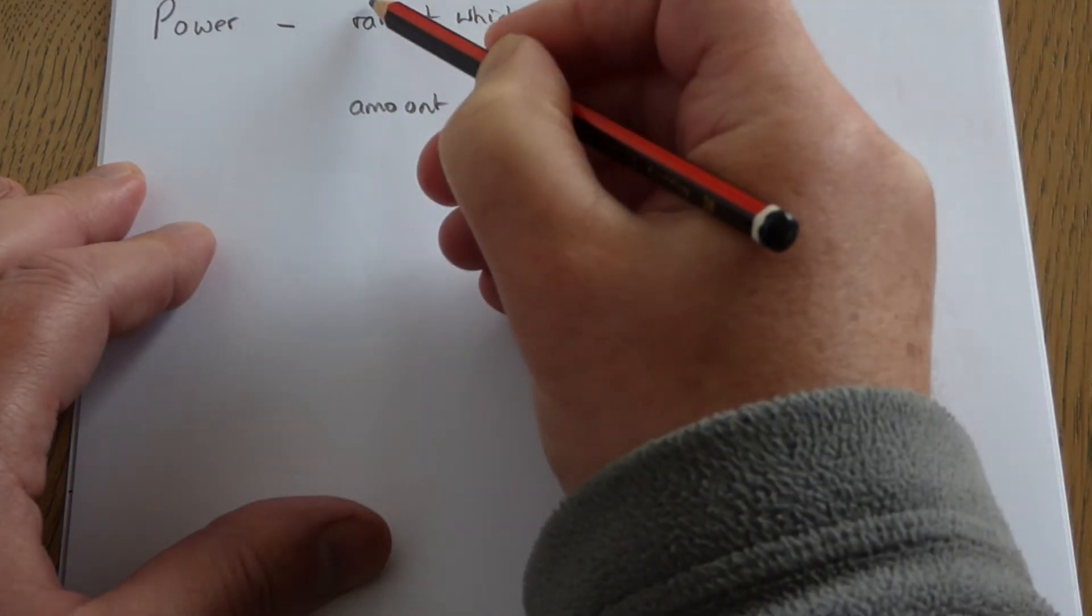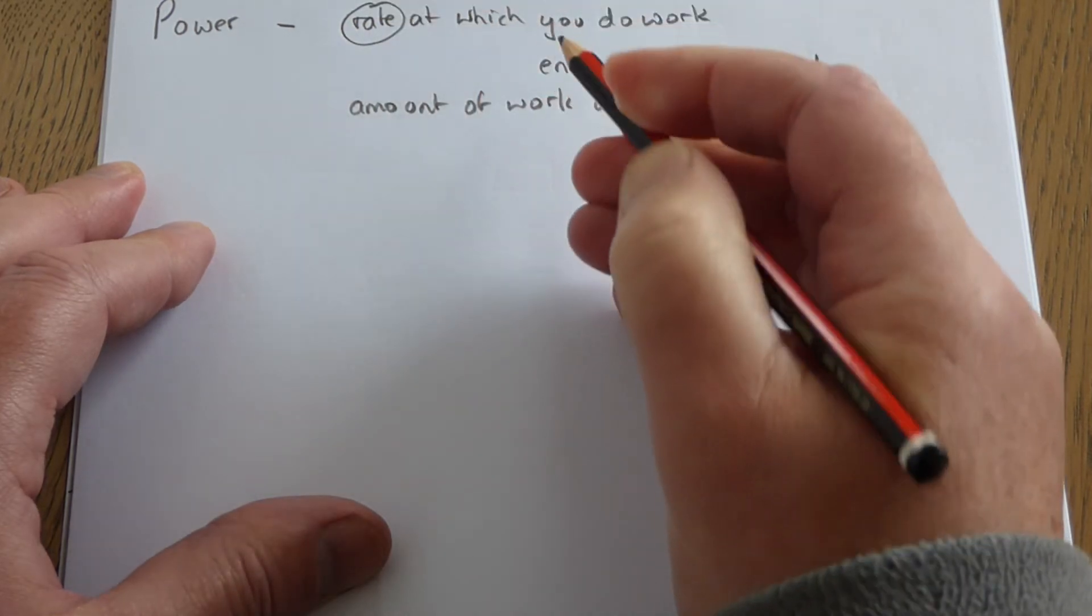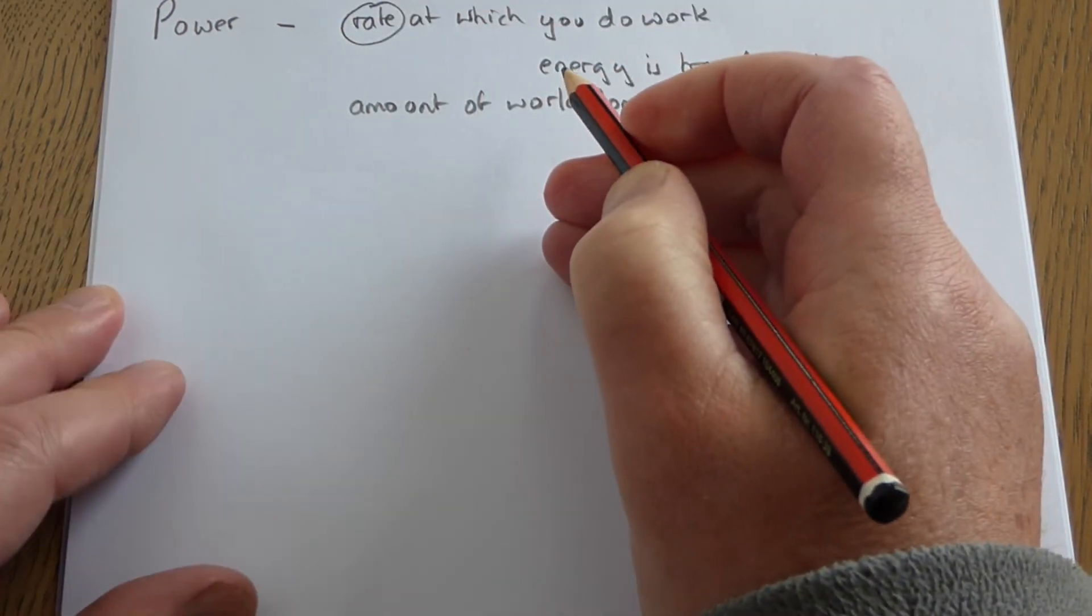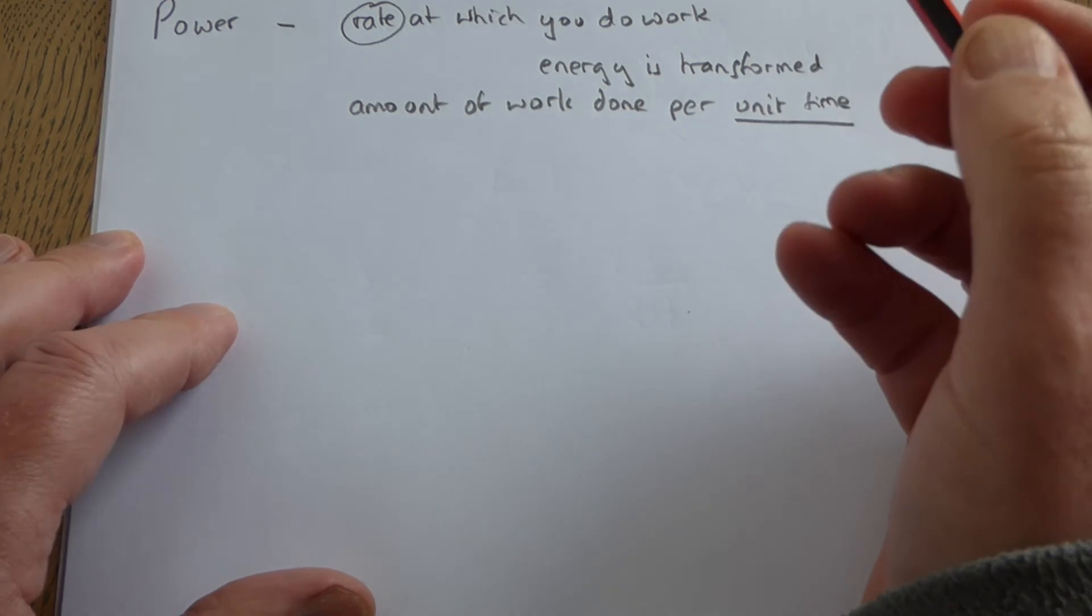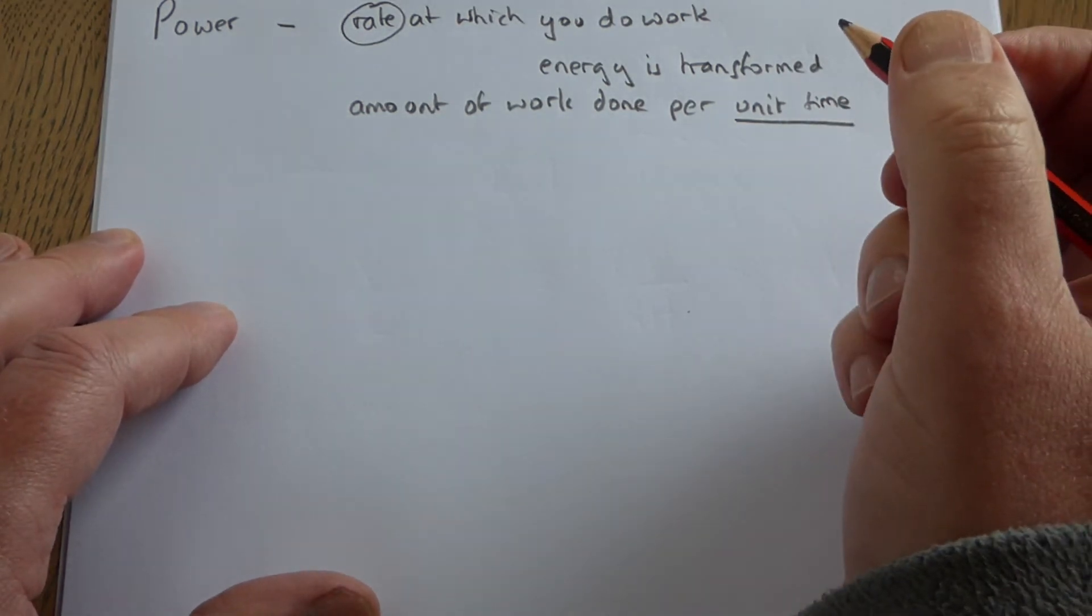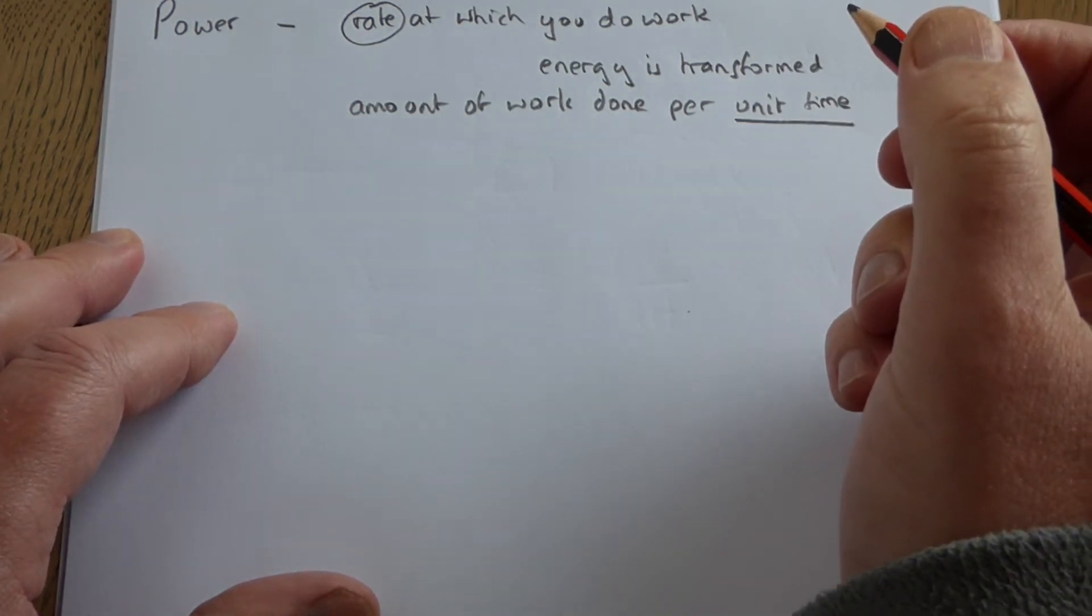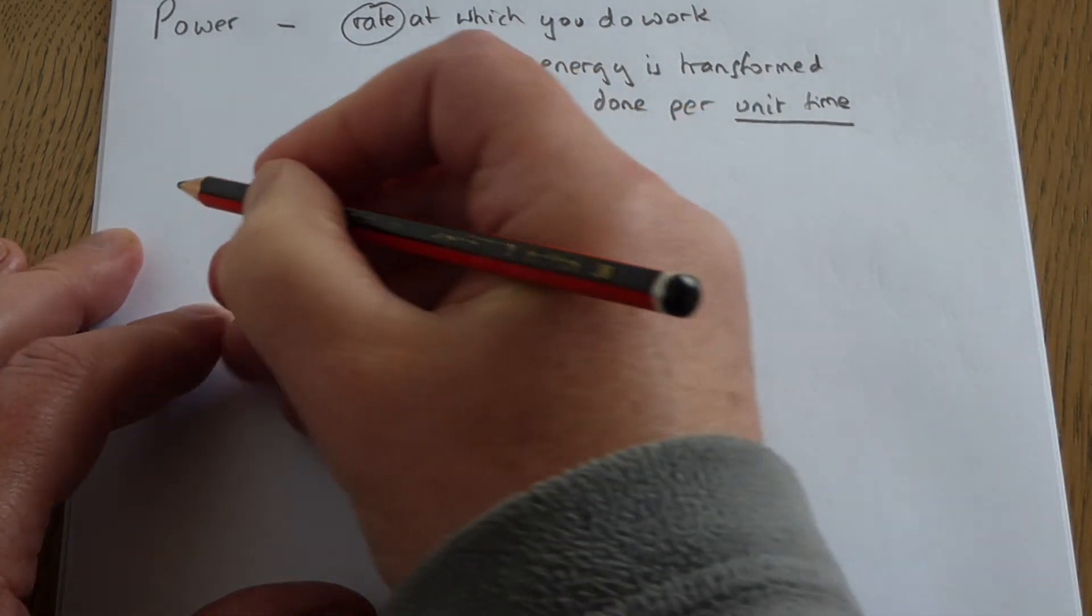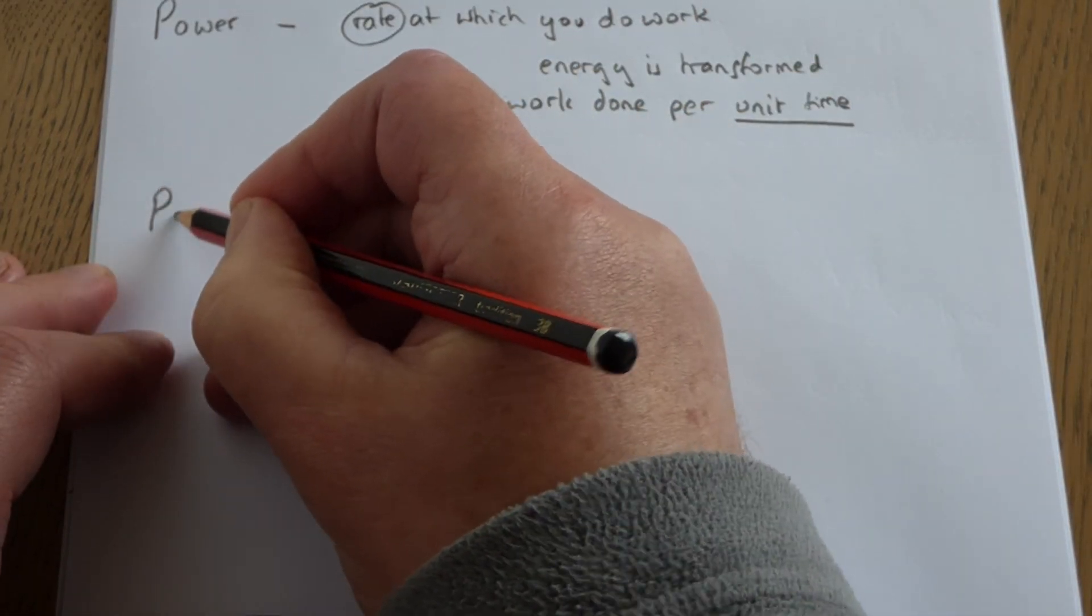If you come across the word 'rate,' you know that it means how quickly you do something. Time is always involved, and you will always divide by time. And for that reason, the formula for power...